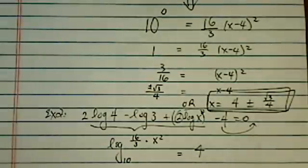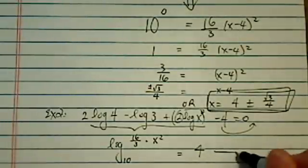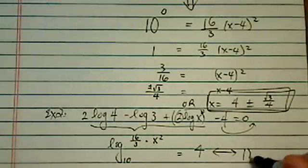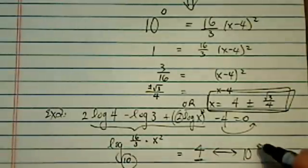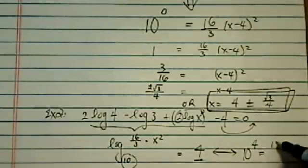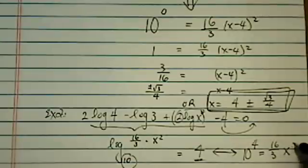Moving the 4 over, basically. And writing this one in exponential form, 10, same base, to the 4 power is equal to 16 over 3 x squared.